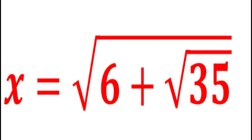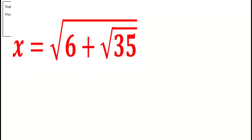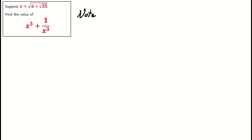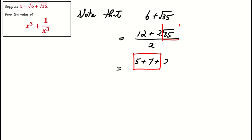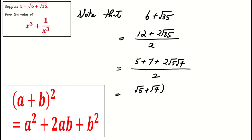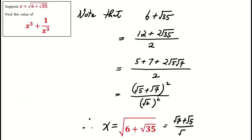We first simplify the radical square root of 6 plus square root of 35. Note that 6 plus square root of 35 can be written as 12 plus 2 square root of 35 over 2. As 12 is 5 plus 7 and 35 is 5 times 7, we have the following by using the formula (a + b)² equals a² plus 2ab plus b². So we get x equals square root of 7 plus square root of 5 over square root of 2.